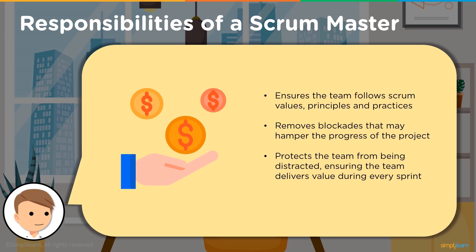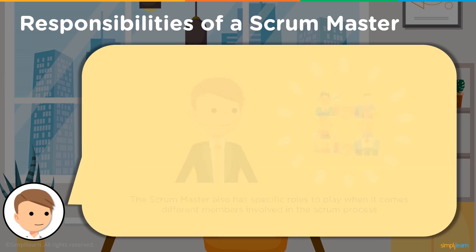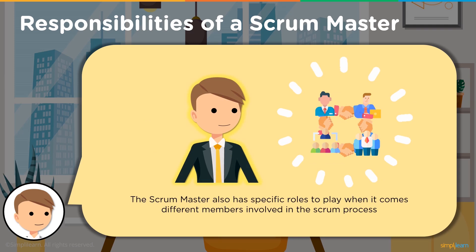The Scrum Master also protects the team from any distraction and external interference to make sure they are able to deliver value at the end of each sprint. The Scrum Master ensures the team is not involved in any irrelevant discussions and stays focused on the sprint's requirements. The Scrum Master also plays different roles with specific components of the Scrum process — including the product owner, the Scrum team, and the organization.